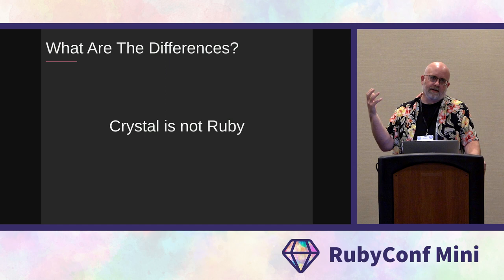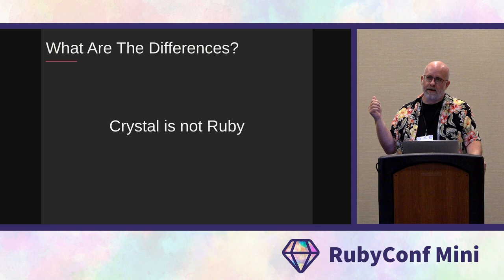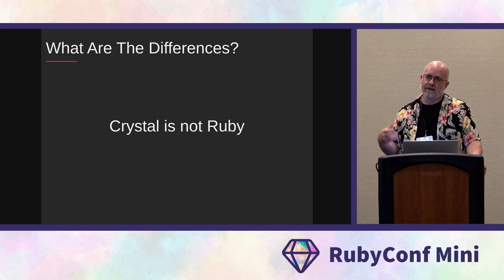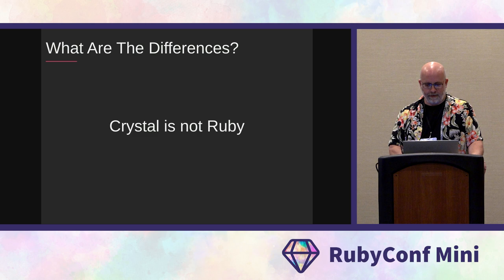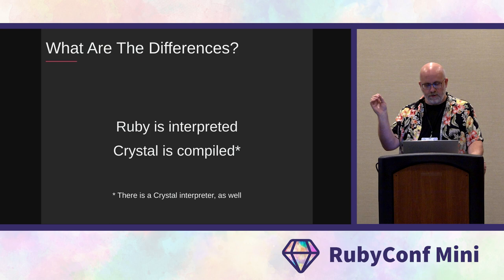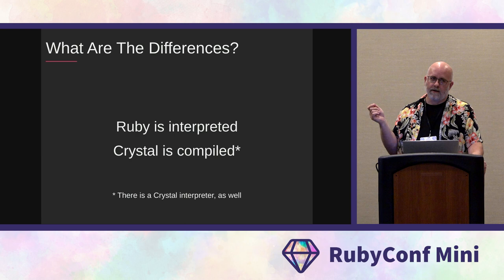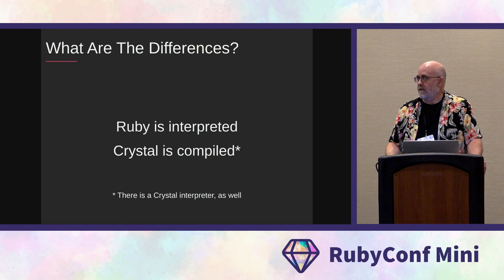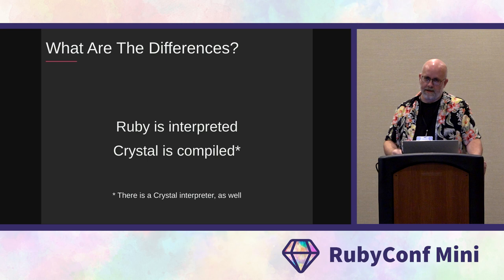Crystal looks so much like Ruby because the people who originally built it built it using Ruby. The first Crystal compilers were written in Ruby, and the original goal was to take Ruby and see if they could make a compiled language that looked and felt like Ruby but was compiled and fast. Ruby is interpreted and Crystal is compiled; however, there is an experimental interpreter for Crystal right now. You can actually run a large subset of your Crystal code as interpreted code, just like Ruby.